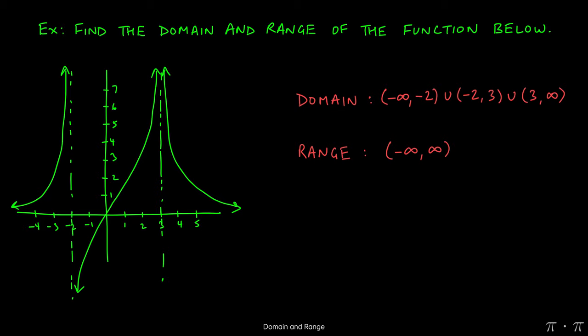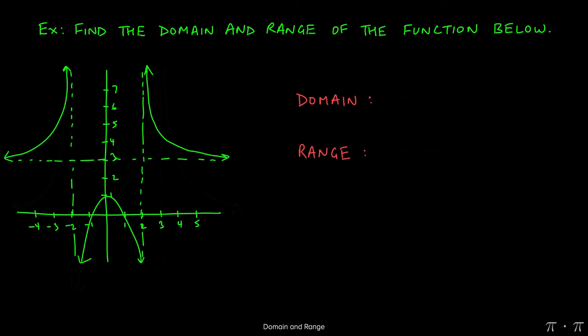Since the middle piece alone gives us from negative infinity to positive infinity, the range is simply negative infinity to positive infinity. For the domain we must examine each piece from left to right, but for the range we only need one piece that spans all y values — the flanking pieces don't add anything new because y values only need to be hit somewhere, not everywhere.